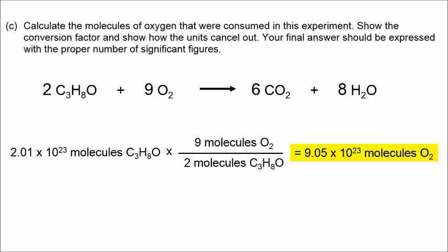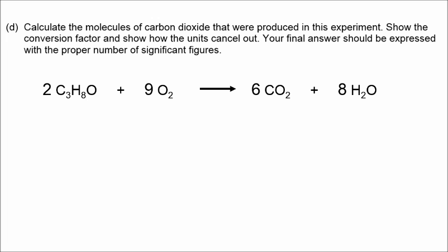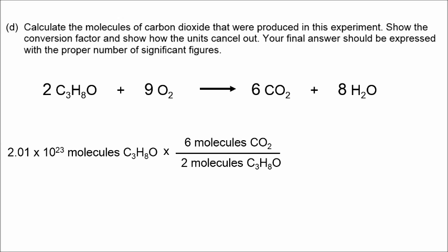In part D, you're doing the same kind of thing, only now we're trying to get to carbon dioxide. You're still going to use the same number of molecules of propanol that you had calculated in part B. But this time, the ratio would be 6 to 2. Or you could say 3 over 1. That's fine. And when you do that math, you get your answer. Round it off to three sig figs. 6.03 times 10 to the 23rd molecules of carbon dioxide produced.